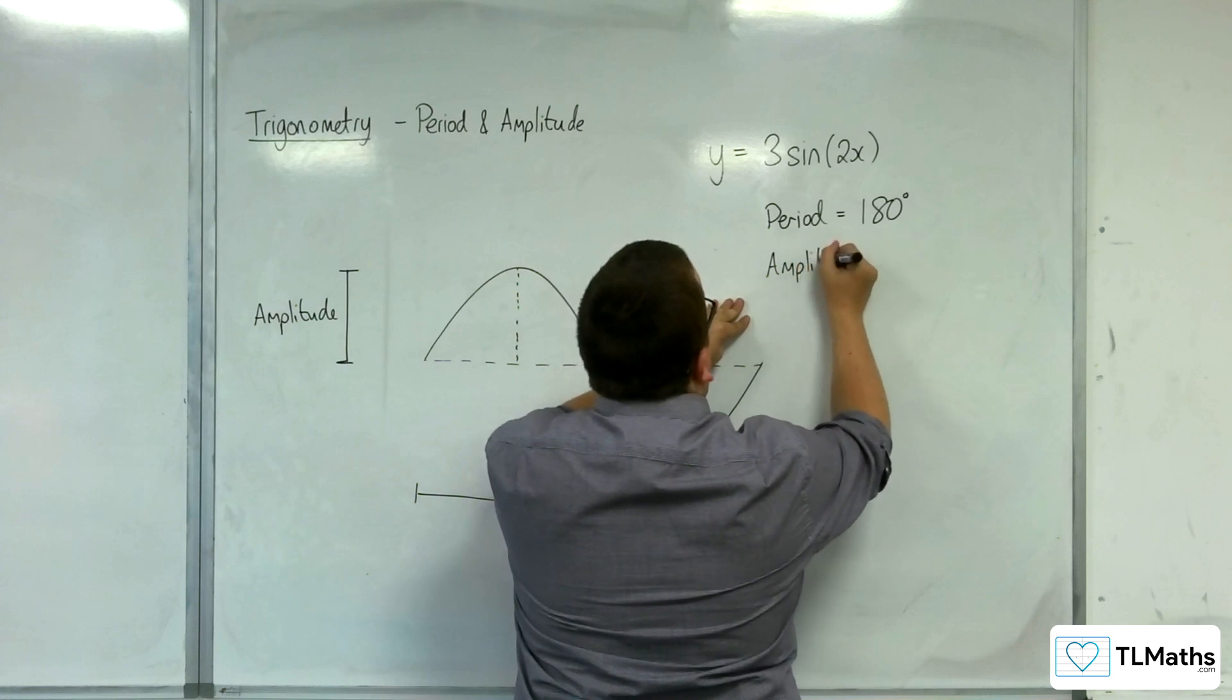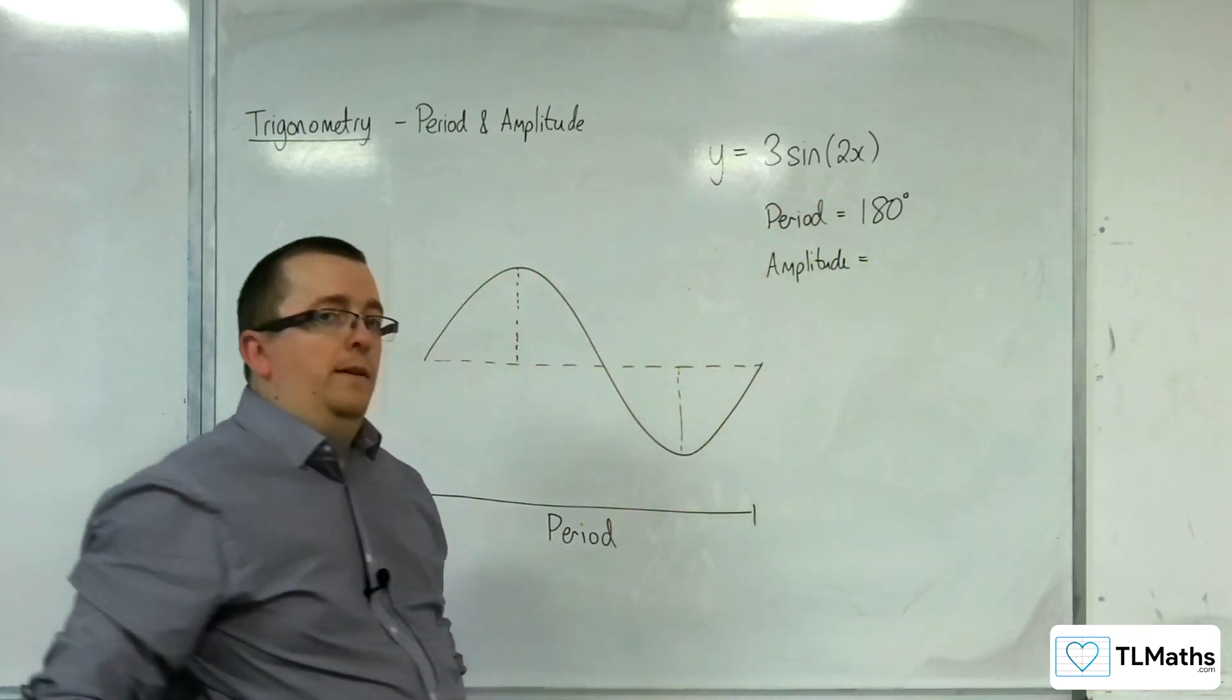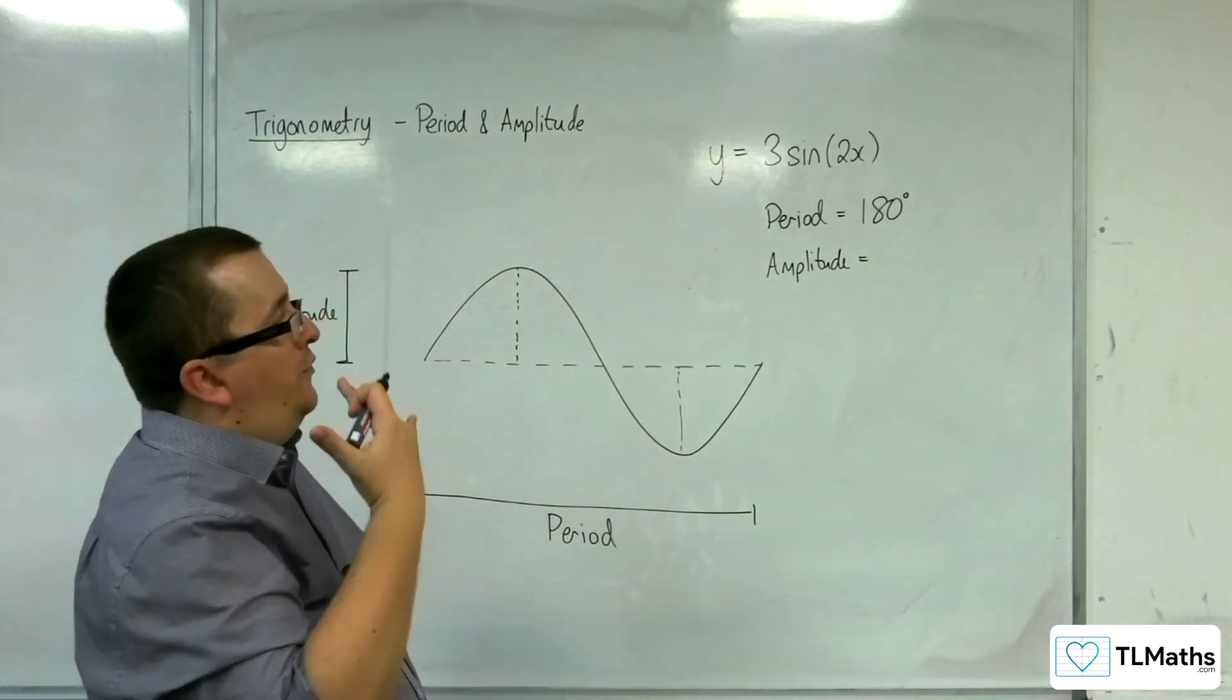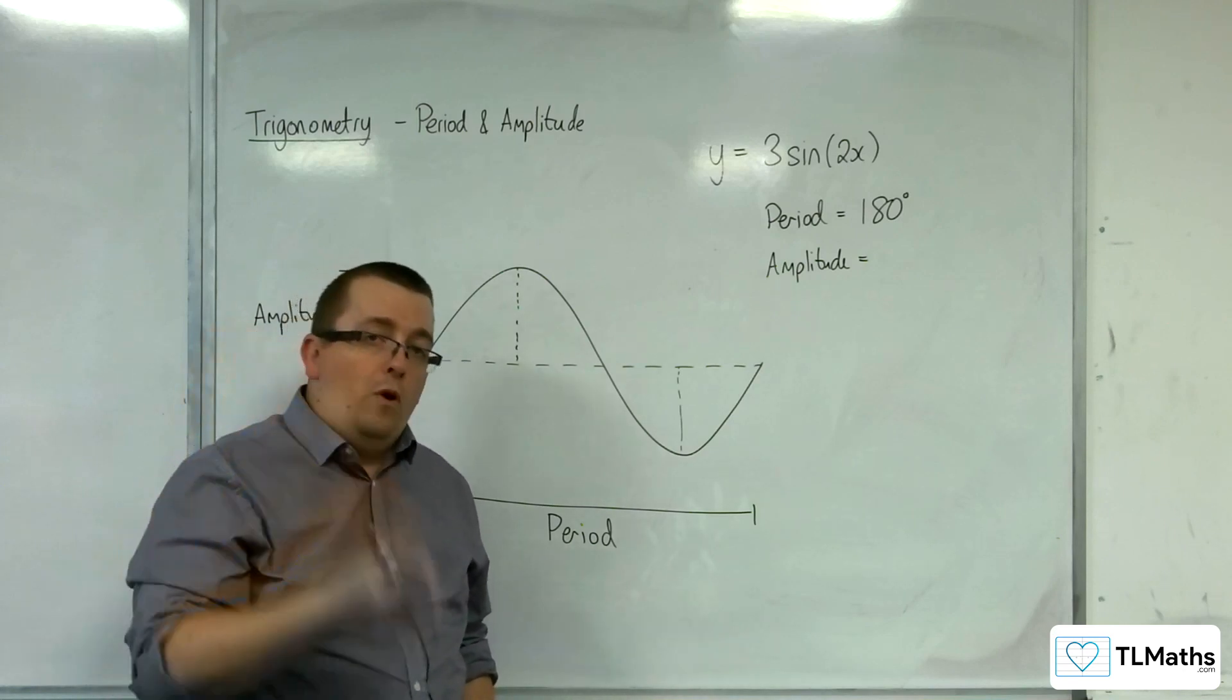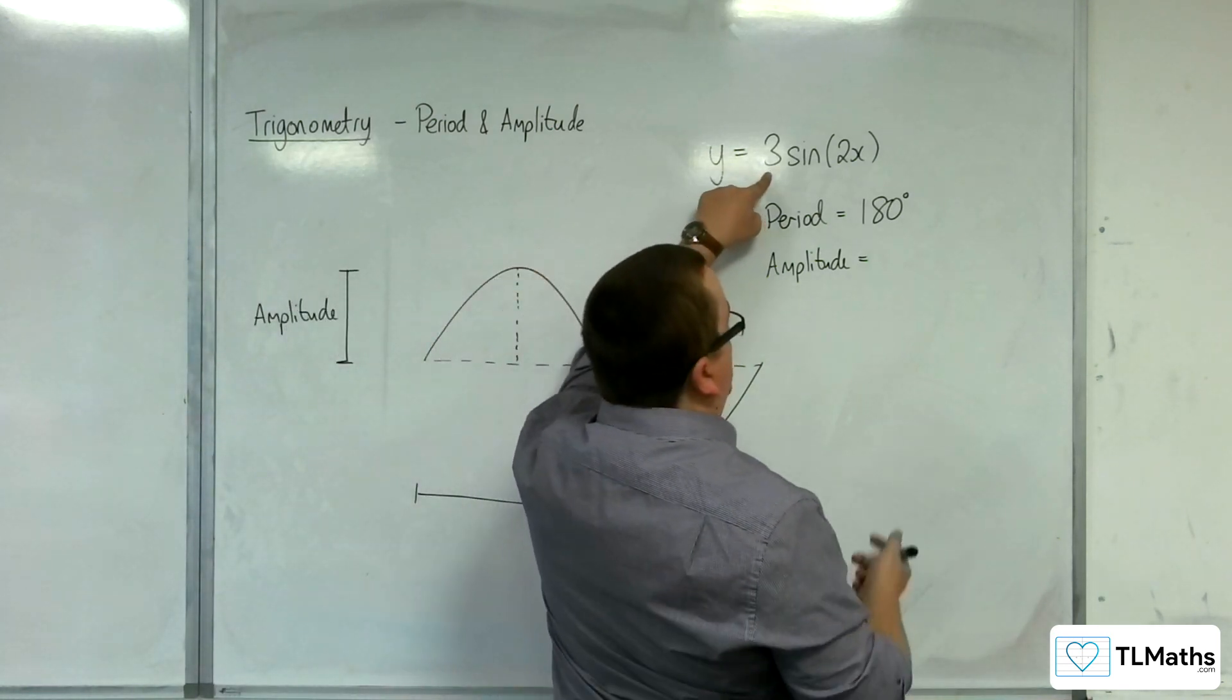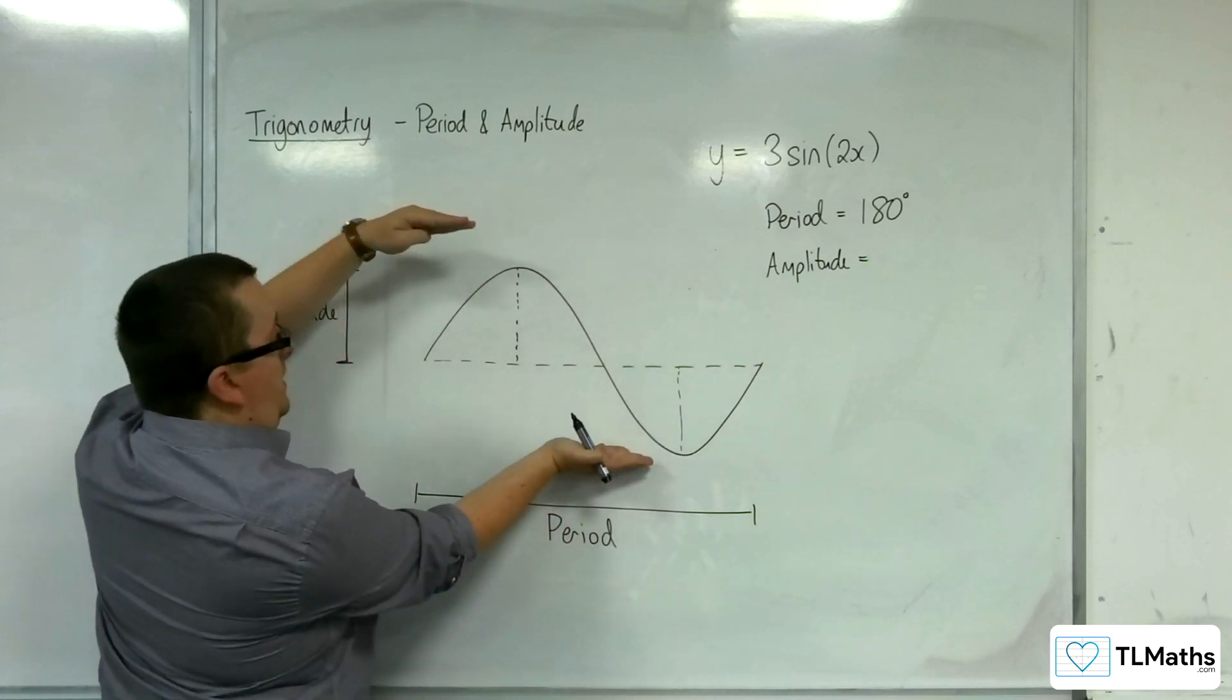Its amplitude is governed by this multiplier, this number on the front. The fact that we've got this 3 means it's been stretched, factor 3, parallel to the y-axis. This is a curve that is now going between minus 3 to 3.